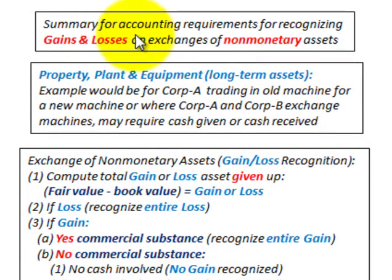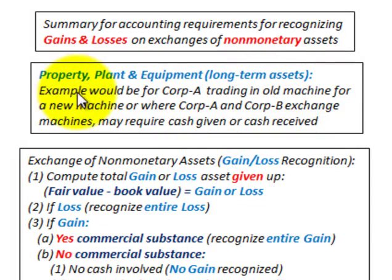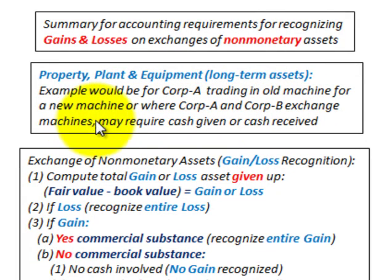What we're going to be looking at here is a summary for accounting requirements for recognizing gains and losses on exchanges of non-monetary assets. What we're talking about for non-monetary assets would be like property, plant, and equipment or long-term assets. An example would be Corporation A trading in an old machine for a new machine, or where Corporation A and Corporation B exchange machines.